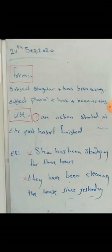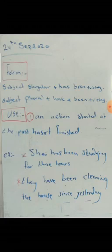للاستخدام الأول، ننظر إلى المثال: 'She has been studying for three hours' — أي أنها تدرس منذ ثلاث ساعات ولا تزال تدرس. كذلك: 'They have been cleaning the house since yesterday' — أي أنهم ينظفون البيت منذ الأمس ولم ينتهوا بعد. إذن، Present Perfect Continuous تعني أن الفعل بدأ في الماضي ولم ينتهِ حتى الآن.